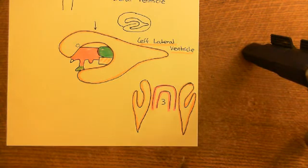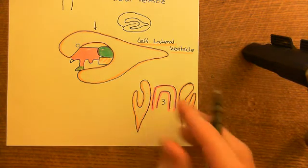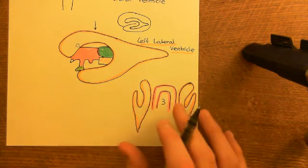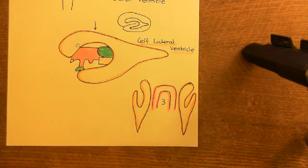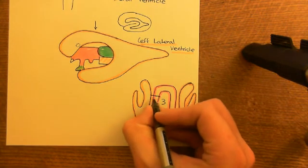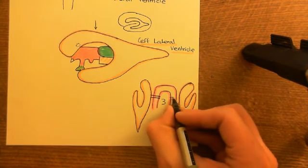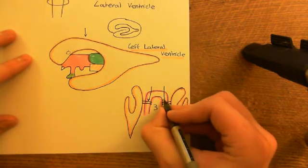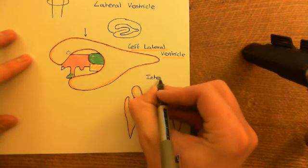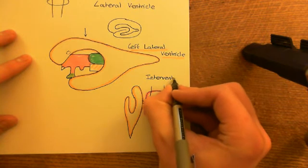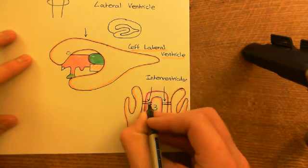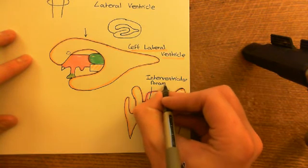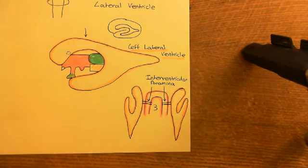So how does the third ventricle connect to these lateral ventricles? There is a connection between the left lateral ventricle and the third ventricle, and also between the right lateral ventricle and the third ventricle. These two little tubes are known as the interventricular foramina — the left interventricular foramen and the right interventricular foramen.